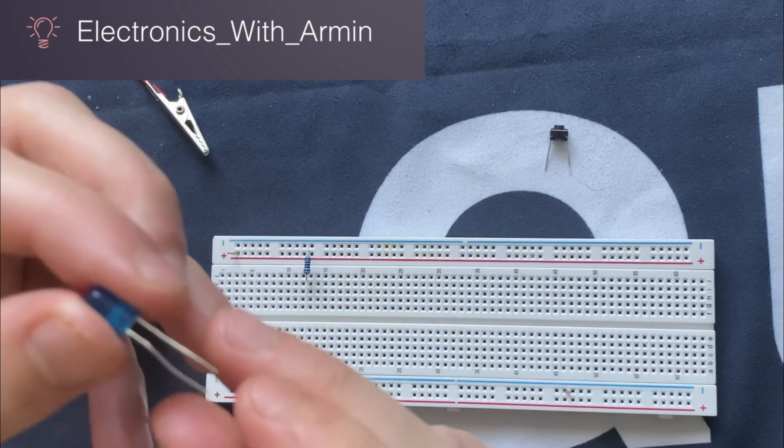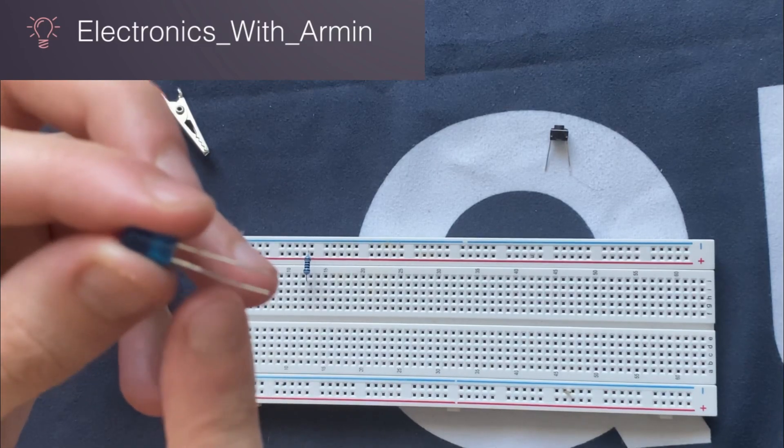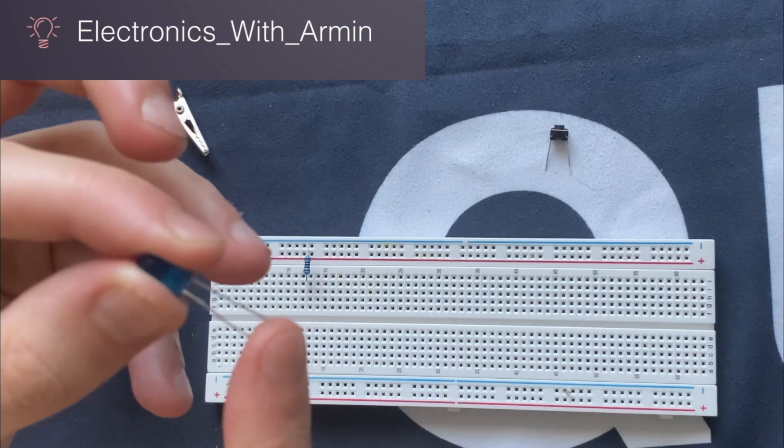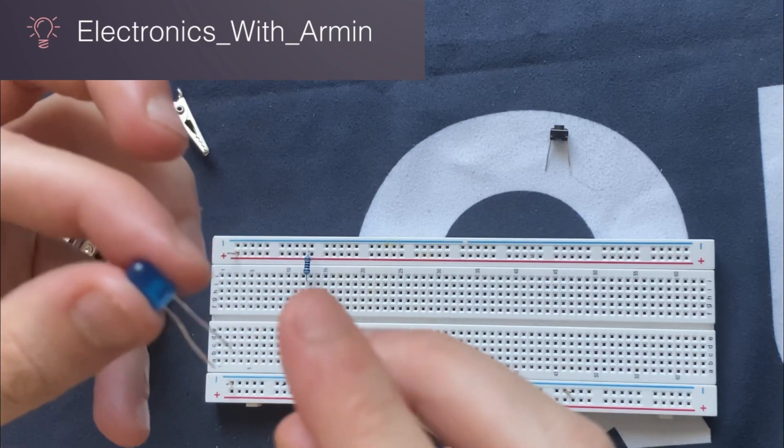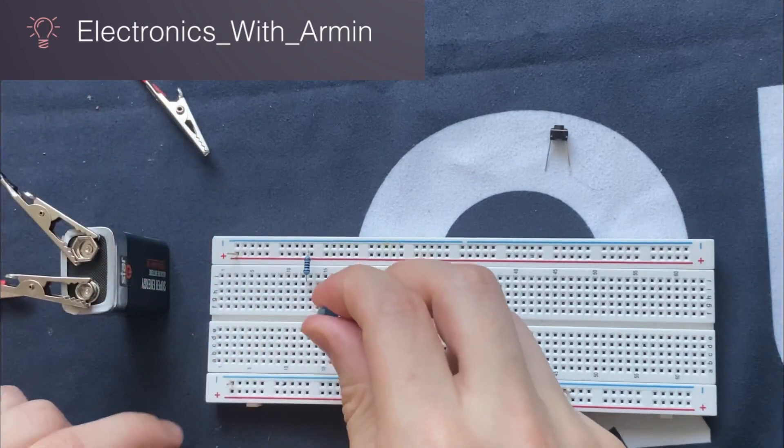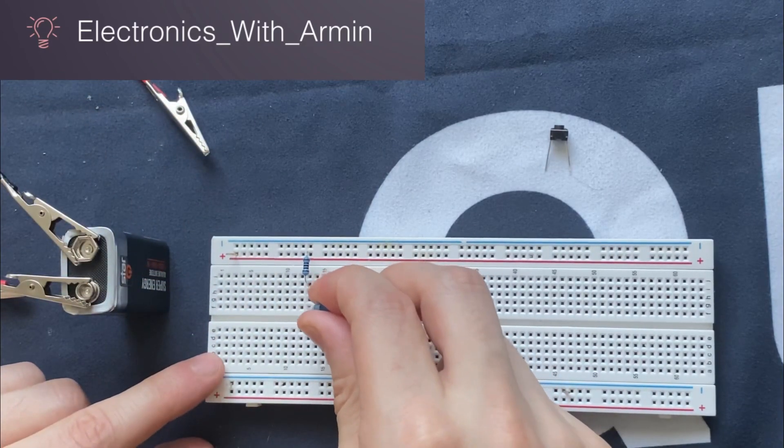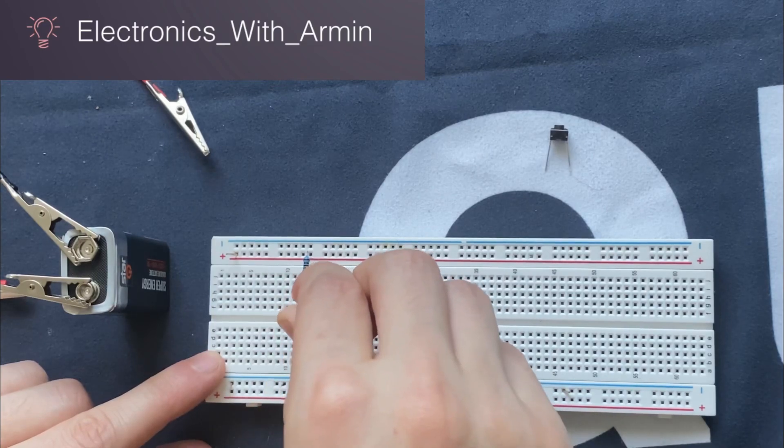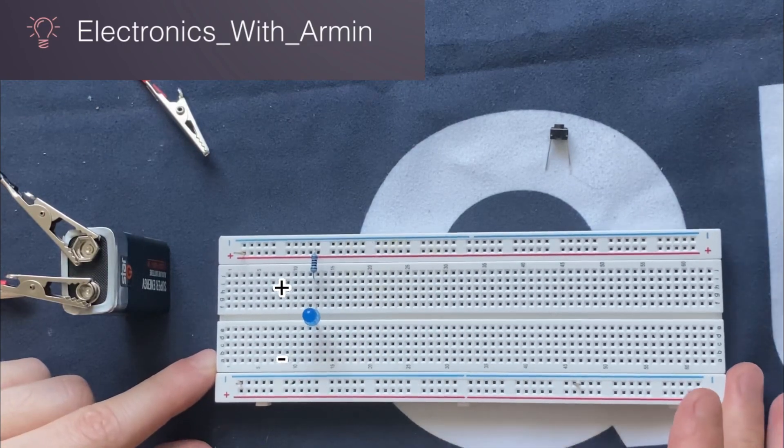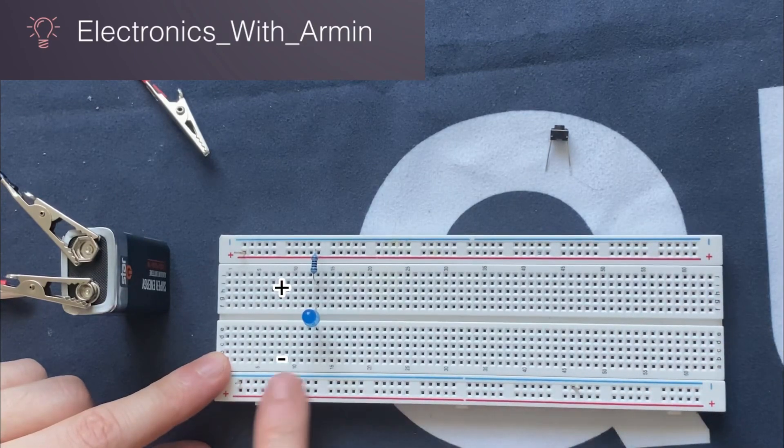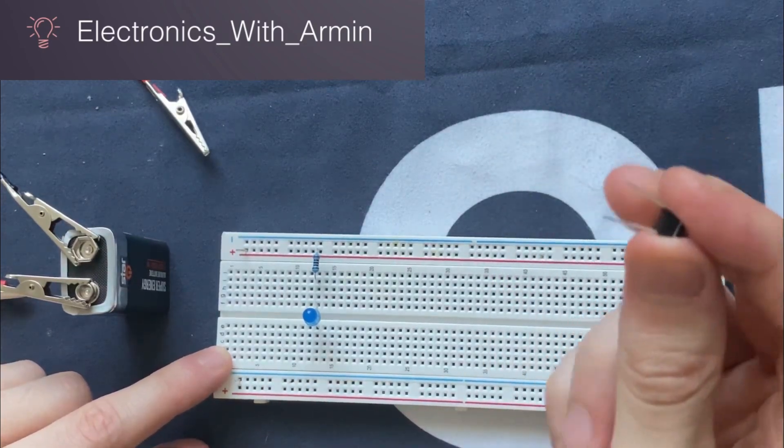Now remember, for the LED, the longer lead is always the anode or positive. So I'm going to connect the anode to the resistor. Now we are going to close the circuit with a push button.